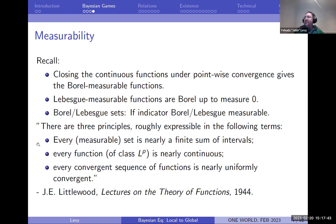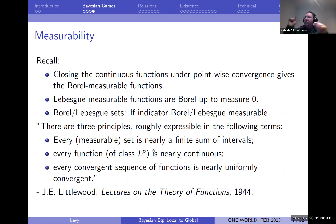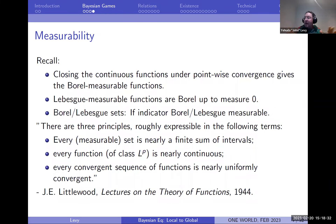Littlewood's principles say: every measurable set is almost the union of finitely many intervals in an appropriate sense; every L^p function is almost continuous; and every pointwise convergent sequence of functions is almost uniformly convergent. There are always ways to remove small sets of measure zero and make these things true. And you always want your things to be measurable because non-measurable things are very weird — you may not be able to integrate, so if you gave non-measurable strategies you couldn't coherently answer what's the probability a player plays left.